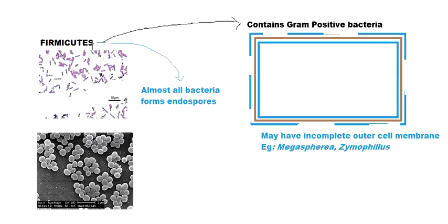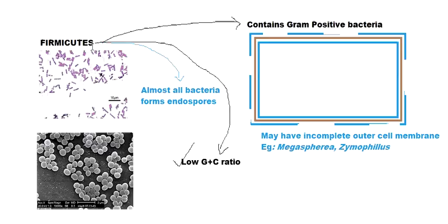Another feature of this phylum Firmicutes is that they have a low G+C content. In the genetic material there is a very low amount of G and C, so the genetic material is not that stable. This low G+C ratio is actually the defining feature of Firmicutes — when people studied phylogeny and classified related organisms into Firmicutes, they found that almost all bacteria in this group have a low G+C ratio.